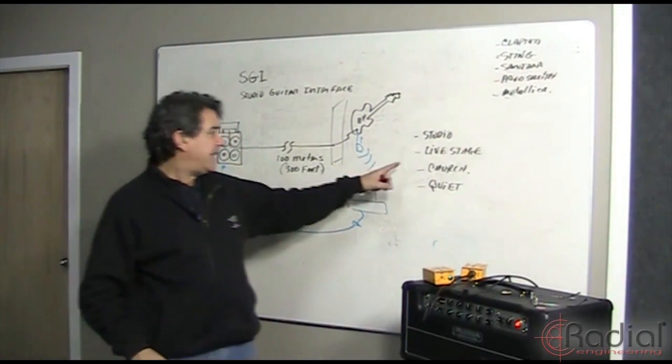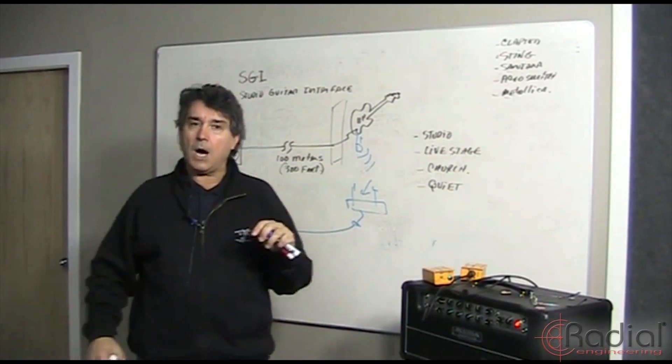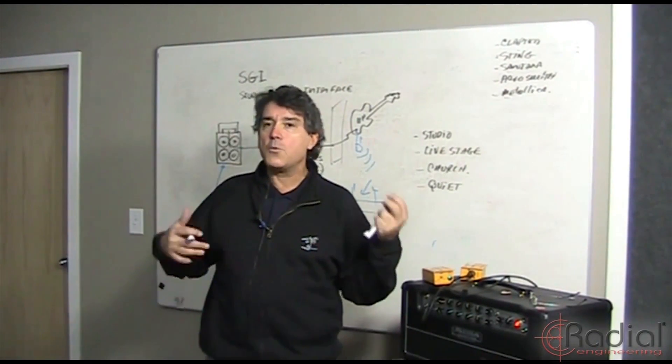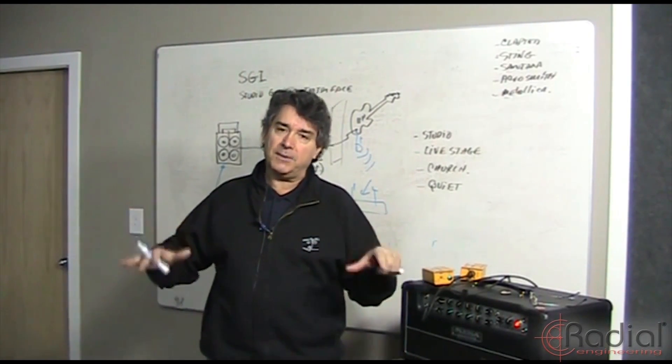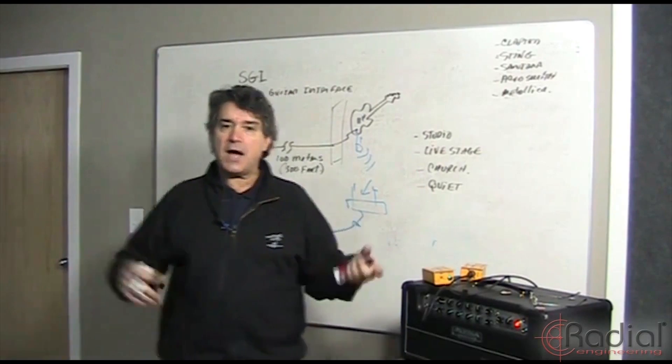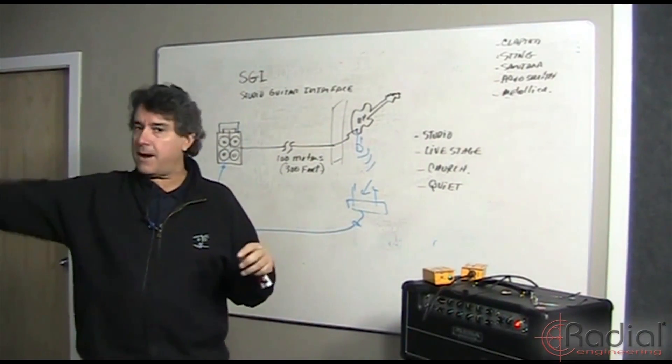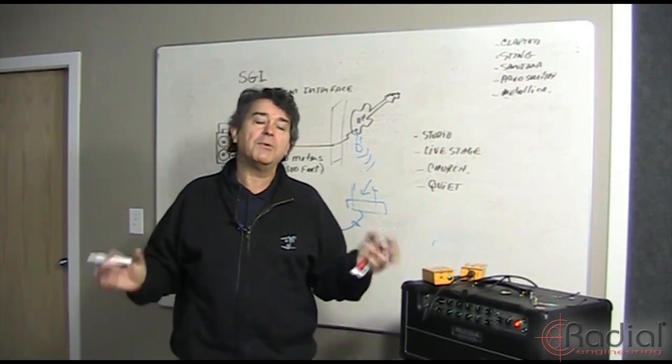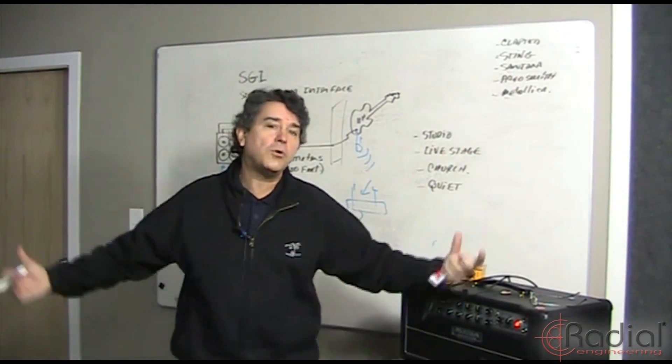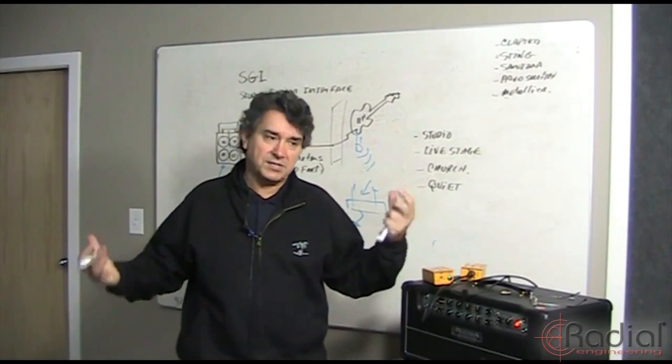In a church application, you might want a really cool sound but you don't want the loudness on stage—you want to keep the volume level low. So the SGI can run downstairs to where your amplifiers are or off stage. These are the kinds of things that in professional production today we really want to control: the sound, the bleed on stage, the noise on stage. The SGI lets you do that.